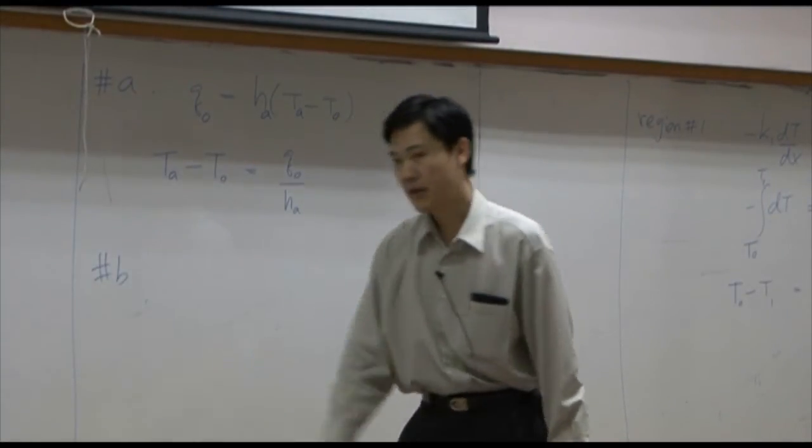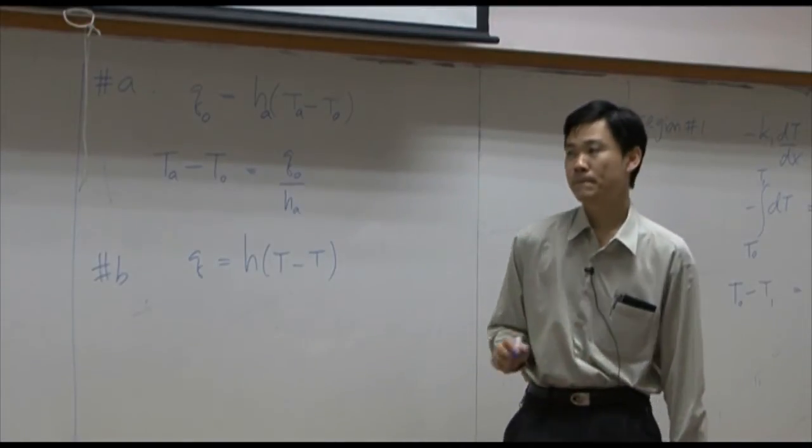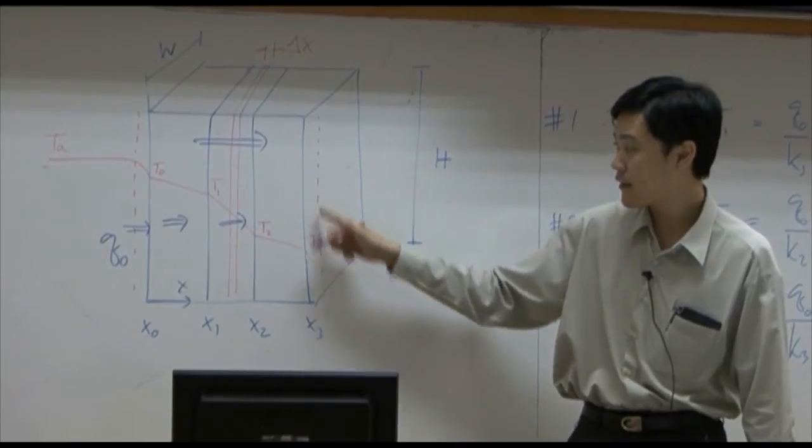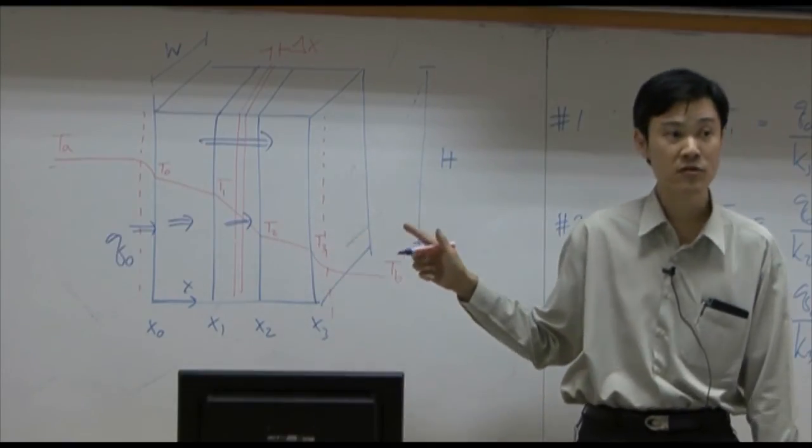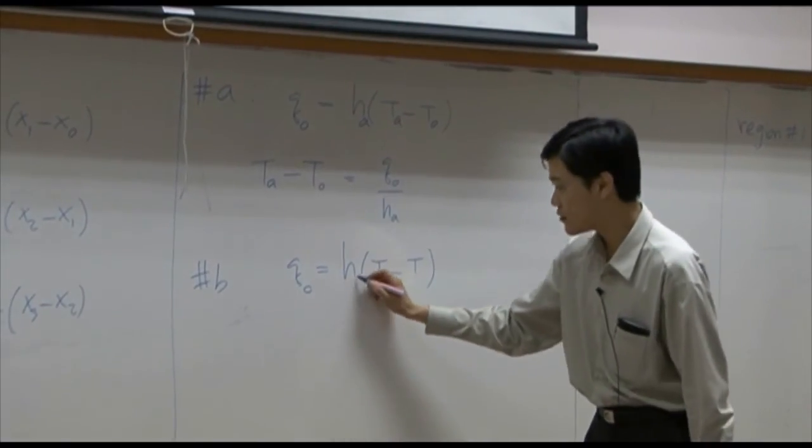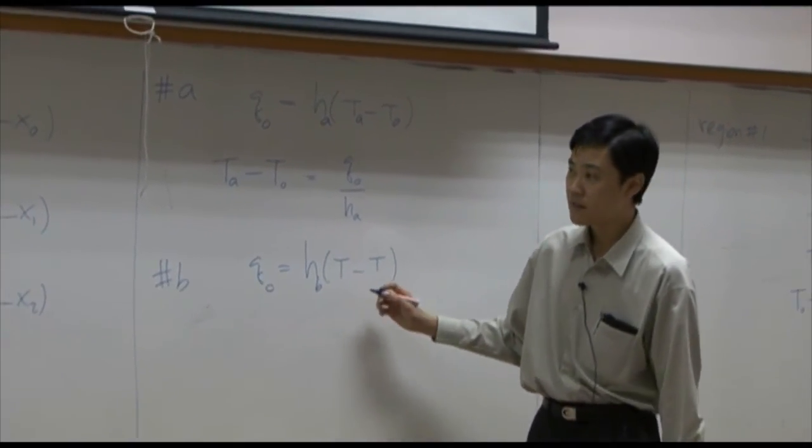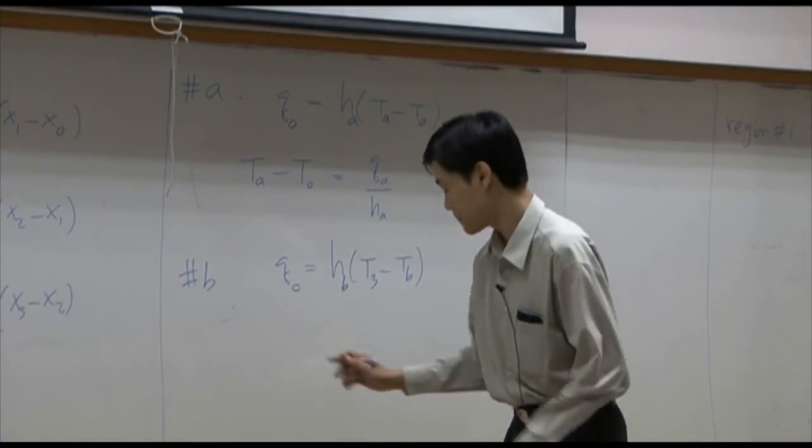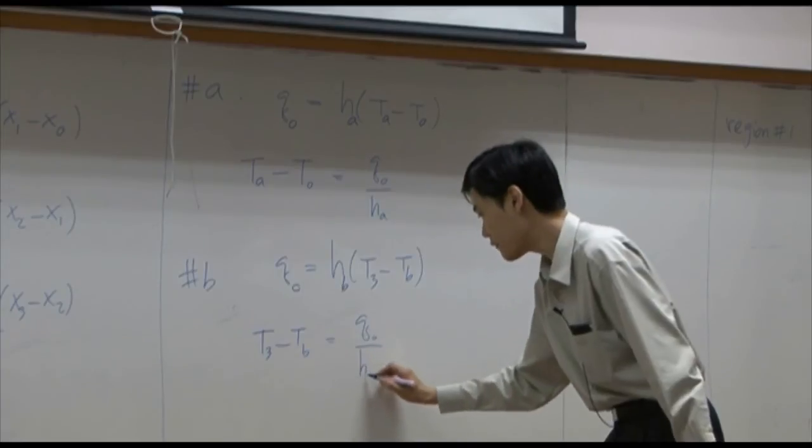Similarly, for region B, again, q equal to h delta T. In region B, the heat that is transferred from this layer is supposed to be received by the thin layer of air. The amount of heat transfer out and amount of heat received by this thin layer is supposed to be equal, and equal to q0 as well. If you call the heat transfer in that layer to be hB, temperature difference is supposed to be high temperature subtracted by low temperature. High temperature is T3, low temperature is TB. So if you rearrange it, you get T3 subtracted by TB equal to q0 over hB.